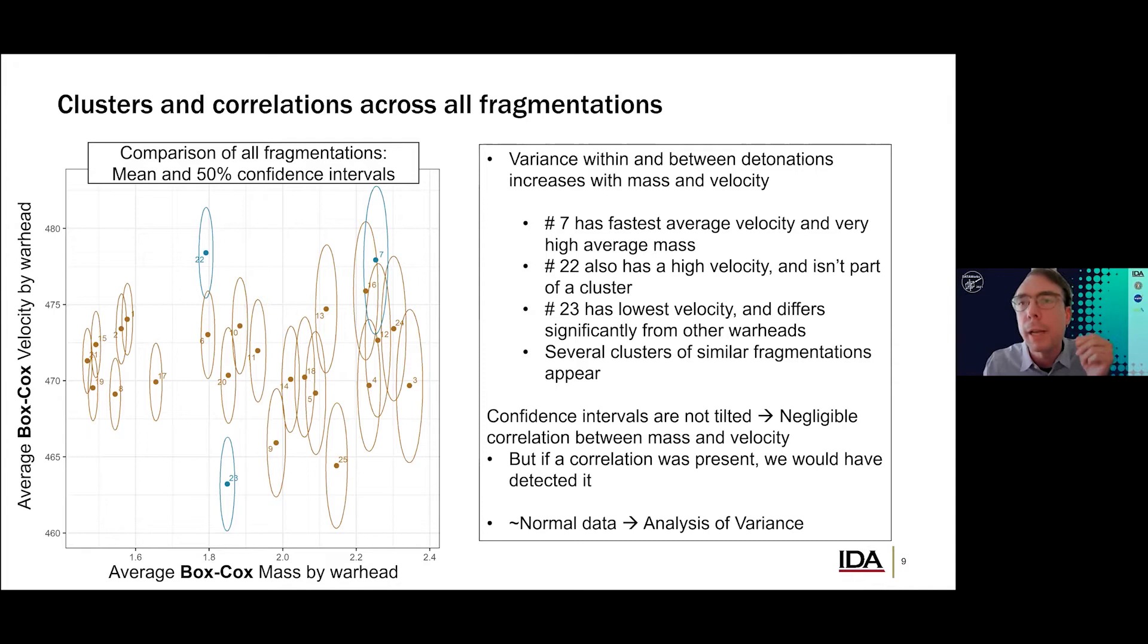Using this transformation, we plot the means and confidence intervals of all mass and velocity pairs. Now, the energy test outliers from the previous slide with the matrix, these are colored in blue on the slide and other detonations are colored in gold. Now, the graph shows a cone-shaped pattern. This means variability between detonations is small when average fragment mass is small. And as average fragment mass increases, variability of detonations increase as well. The graph characterizes why the energy test selects outliers. In particular, detonation 22 has a high average velocity, but it's on the lower end of mass, average frag mass. And similarly, 23 has a low average velocity.